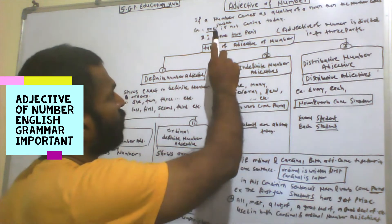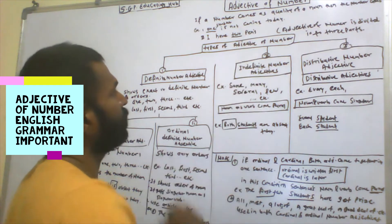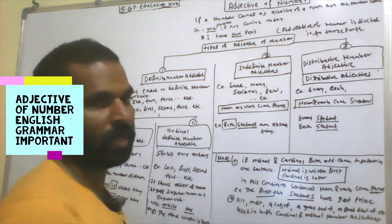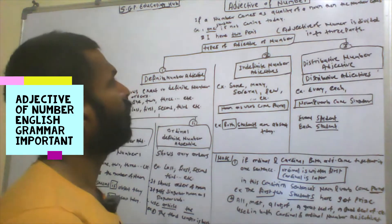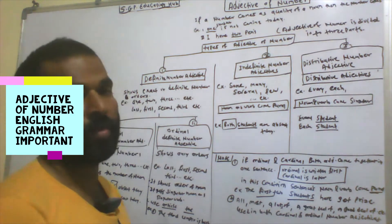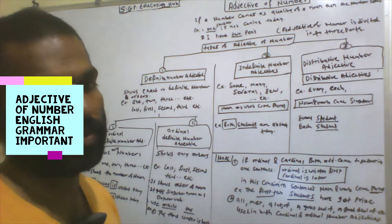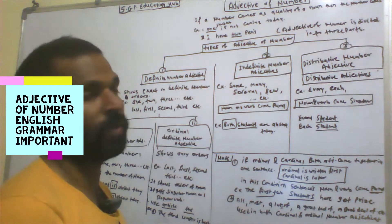Example: 'One student is not coming today.' 'I have two pens.' Here, in both sentences, the number comes as an adjective of the noun — adjective of number.